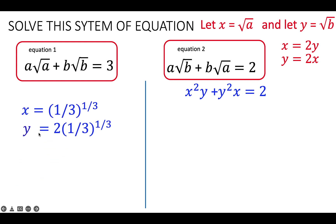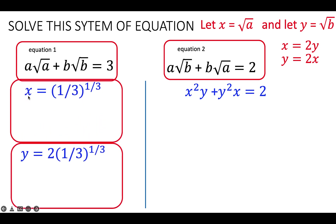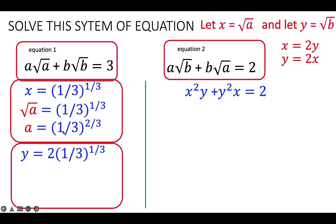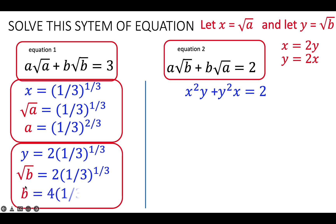From these X and Y values, we can solve for A and B. Since X equals the square root of A, replacing X and squaring both sides gives A equals (1/3) raised to 2/3. For B, since Y equals the square root of B, squaring Y equals 2 times (1/3) to the 1/3 gives B equals 4 times (1/3) raised to 2/3. These are the values for A and B based on case 1.